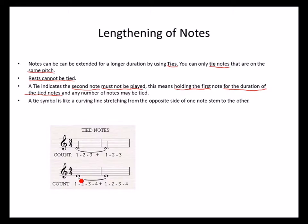The curving line stretches from the opposite side of one note stem to the other, or from the note head to the other note head. For example, a semibreve worth four beats tied to another semibreve worth four beats gives you a value of eight beats. Remember, you only hold this for the duration of the tied notes.